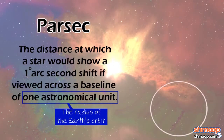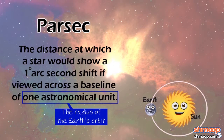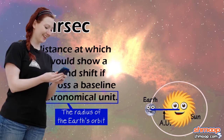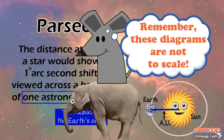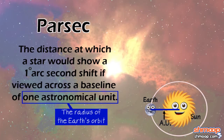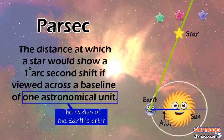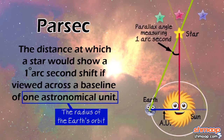We've got this diagram. Here's us, here's the Sun — the distance from us to the Sun is one AU, or one astronomical unit. So if we're on the Earth and we look at a star located here, a parallax angle measuring one arc second is formed. The distance from our Sun to that star? One parsec.